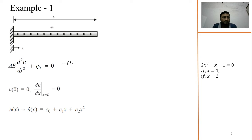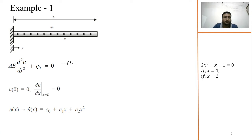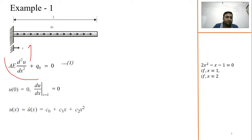First problem. Here you can see a simple bar problem which is subjected to axial load in the x-direction only. For this, I will work purely from the equation — the governing equation shown here is: AE d²u/dx² + q₀ = 0. This is the governing equation for this problem.